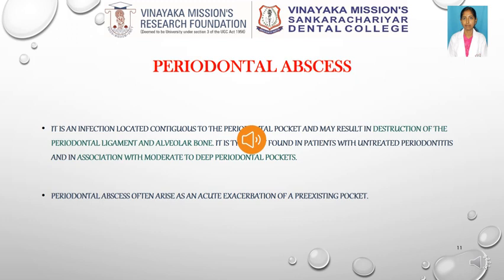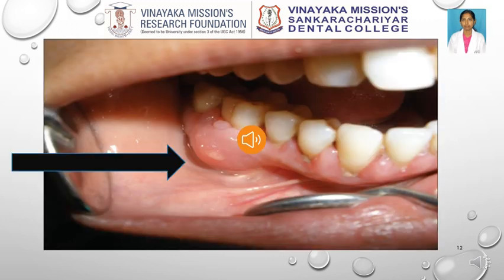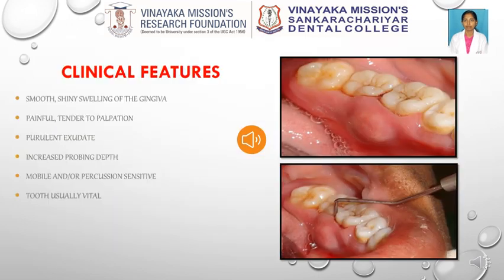Now coming to periodontal abscess, it is an infection that often arises as an acute exacerbation of a pre-existing pocket. It results in the destruction of the periodontal ligament and alveolar bone. It is often seen associated in patients with untreated periodontitis with moderate and deep periodontal pockets. Here is a picture depicting periodontal abscess around tooth 4-6. Clinical features include a bluish-red, smooth, shiny swelling which is fluctuant in nature with purulent exudate. Deep pockets and gingival recession may be present. Mobility and tooth extrusion is seen. Pain and tenderness to palpation are common clinical features. The tooth is usually vital.